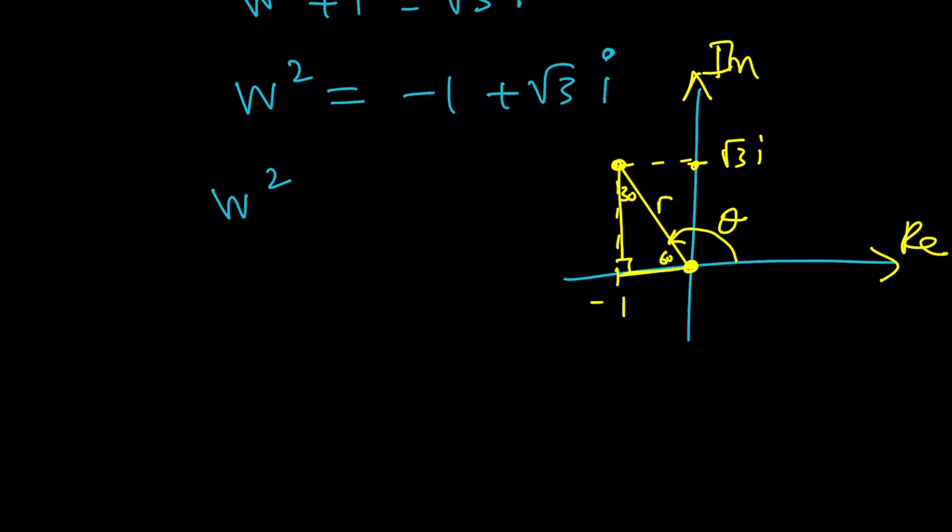And this is a right angle. So this is going to be 60 degrees. But we're interested in theta, which is going to be 120 degrees. So theta is 120, which can also be written as 2 pi over 3 radians. Now let's go ahead and write this as the modulus, which is 2, times e to the power i times 2 pi over 3.